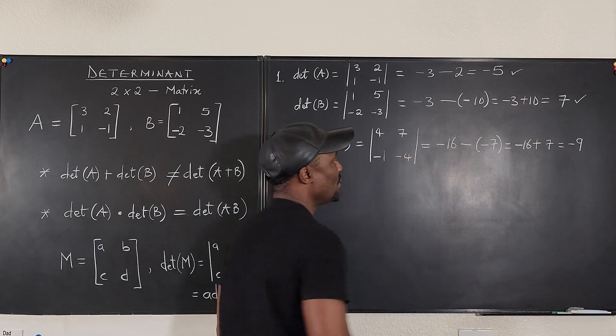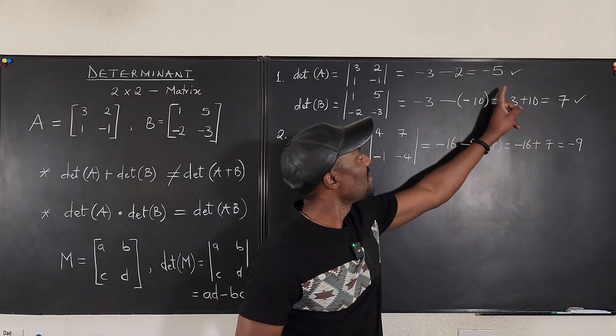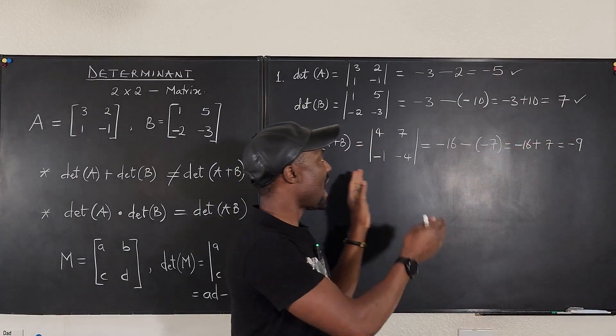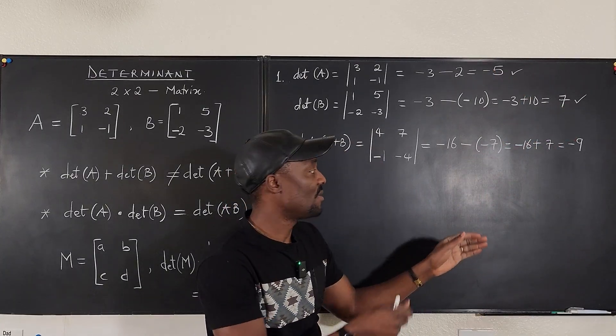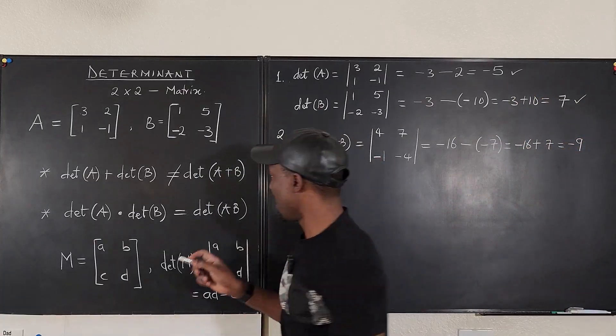Ah, it's different. So minus 9 is not the same thing as minus 5 plus 7. See, this will give you 2 if you add them together. But if you add the matrices before taking the determinant, you get minus 9. So you can see it justifies this claim.